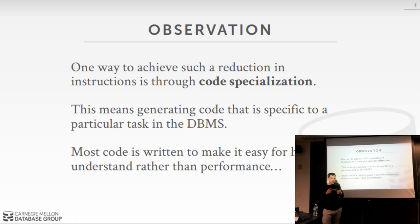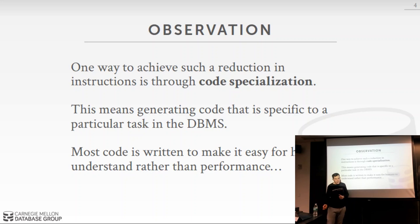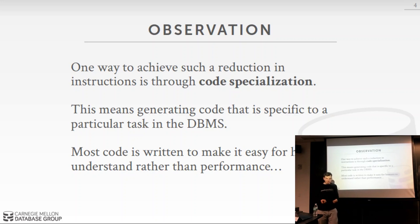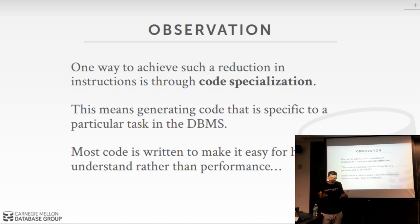With code specialization, we can bake into machine code everything we know about the data and the query. We don't need giant switch clauses that say 'if it's an int, do this; if it's a float, do that.' We know everything a priori. The reason most existing systems don't do this is that the way to write database engine source code that's most easily understandable by humans actually often turns out to be the worst way to write it for your CPU. That's why most systems start with an interpreted engine — it's easy for humans to understand and engineer.